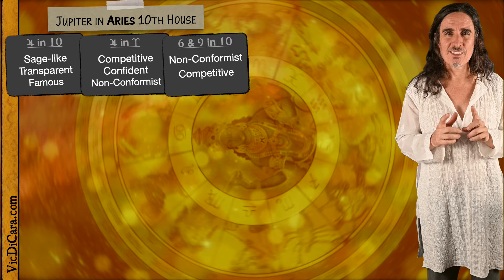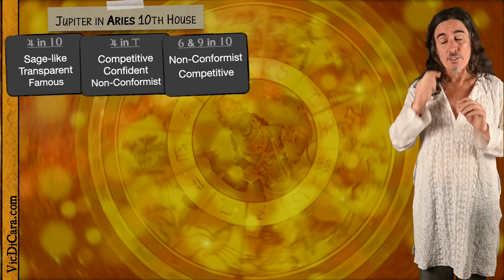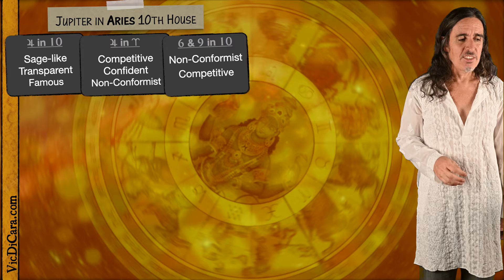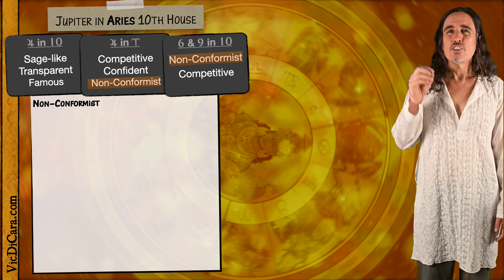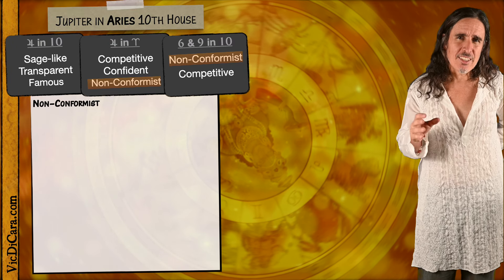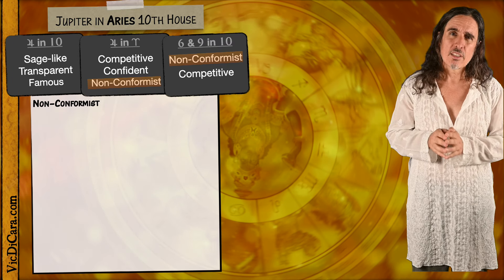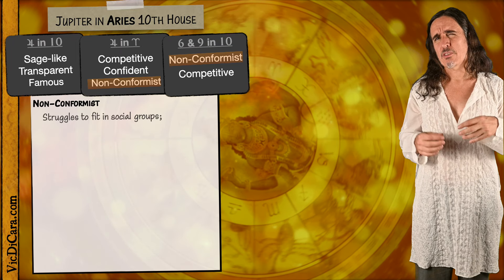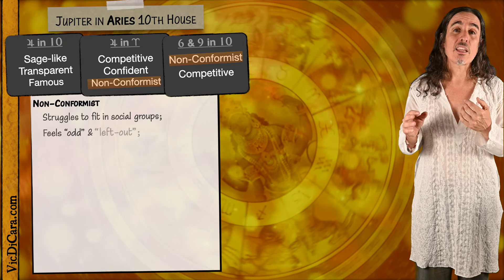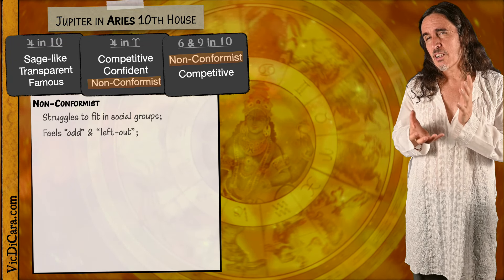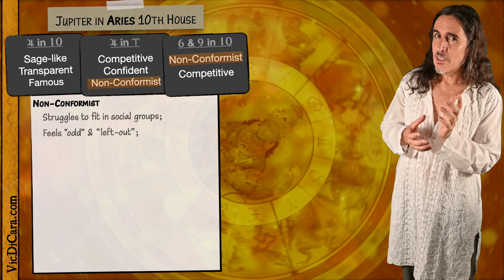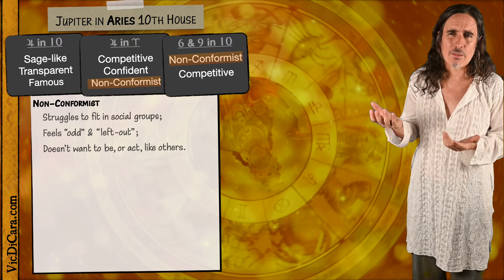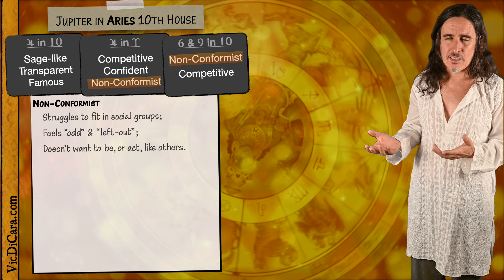With these three sets of information about Jupiter in the Tenth House in Aries, we can get a good picture of how to interpret it. First, the word non-conformist appears in two of these lists — Jupiter in Aries is non-conformist, and the Sixth and Ninth Lord in the Tenth House is non-conformist. So Jupiter in Aries in the Tenth House definitely signifies a non-conformist person. Non-conformist means you struggle to fit in with normal groups; you tend to feel like the weird or odd one and get left out. But because you're non-conformist, that's okay — you don't want to look, talk, or think the same way as everyone else.